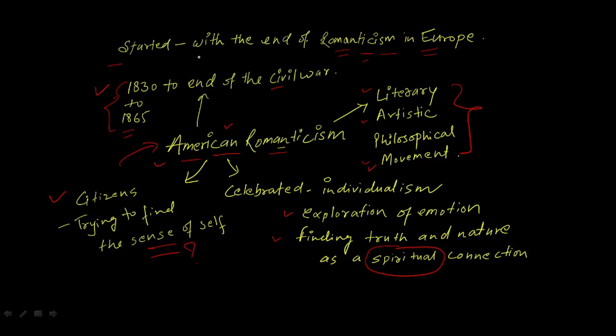American Romanticism started with the end of Romanticism in Europe. The years were between 1830 to 1865, or 1832 to the end of the Civil War. What was the peculiar quality about it? It celebrated individualism, exploration of emotion, and finding truth and nature as a spiritual connection.